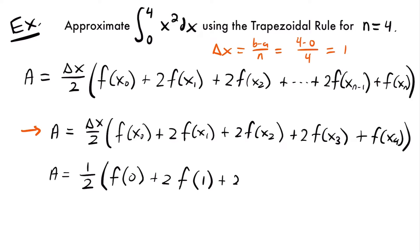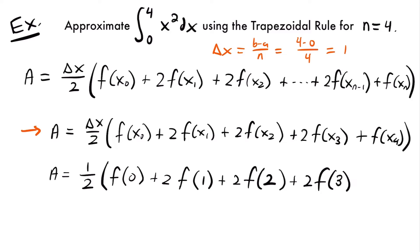Then we add 2 times f of x sub 2. x sub 2 will be 1 more than the previous value, so we take 1 and add delta x to get 2. Then we add 2 times f of x sub 3. f of x sub 3 is 1 more than the previous value of 2, so adding delta x gives us 3. Then f of x sub 4 is 3 plus 1, which is 4.